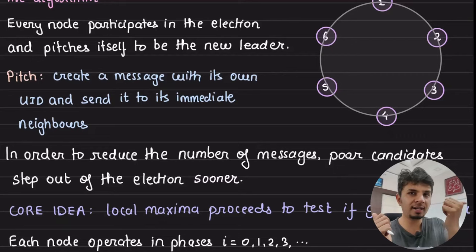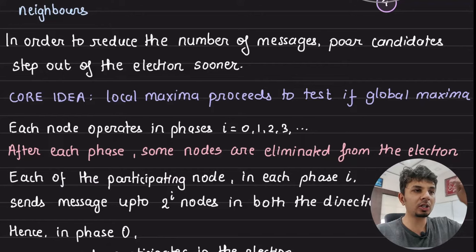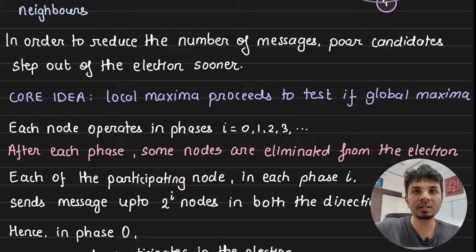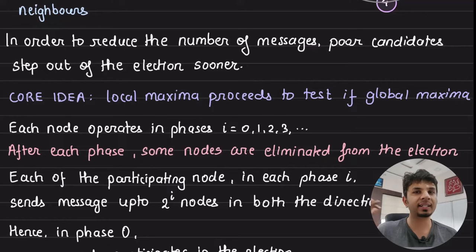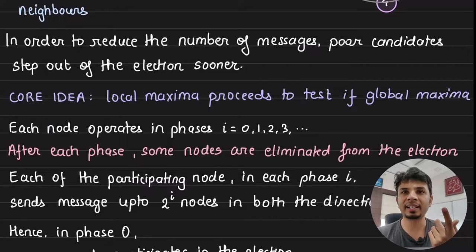Each node sends its candidature message to both neighbors. To achieve O(n log n) complexity and do better than O(n²), the key idea is that there are multiple rounds, and nodes that know their UID is definitely less than someone else's in the network immediately step out of the election. This reduces the number of messages exchanged and hence reduces the communication complexity.